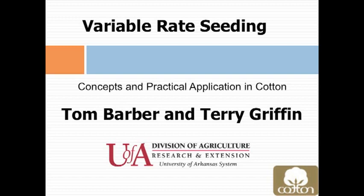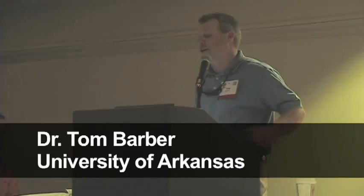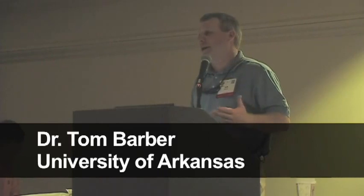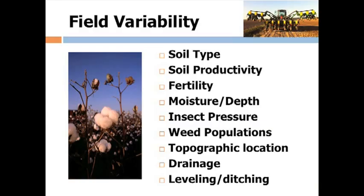When we talk about precision ag in regards to anything — any crop or any kind of application — we're really looking for field variability. What's different in one area of that field versus another? When it comes to planting, these factors are key as well. The most important factors we found for seeding are soil type, which is an obvious answer, and field productivity — areas of the field that generally produce more than others.